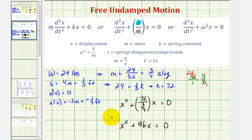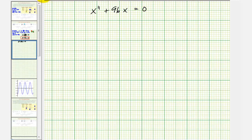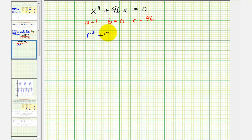This is a linear, second-order, homogeneous differential equation with constant coefficients, which means we can solve it using a characteristic equation. For a quick review, we set up the characteristic equation using the values of a, b, and c from the differential equation. We're going to have complex roots, so the general solution fits that form. Here a equals one, b equals zero since there's no x-prime term, and c equals 96, giving us r-squared plus 96 equals zero.